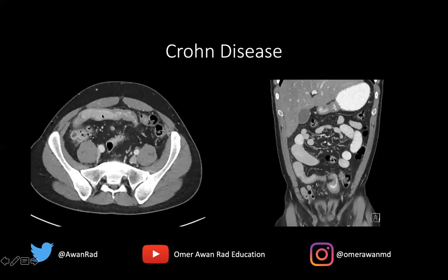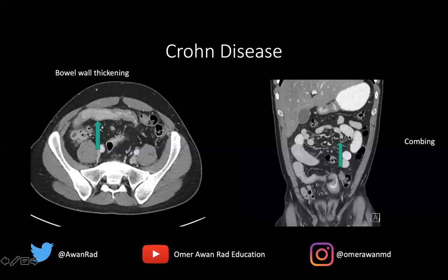Additional CT examples of Crohn's disease show marked bowel wall thickening with mucosal hyper-enhancement. Combing of the mesentery — engorgement of the vasa recta coursing toward the bowel — is a characteristic feature of Crohn's disease on imaging. On a coronal view, we can see bowel wall thickening along the terminal ileum; the wall should only be one to three millimeters, but here it is triple the normal size.